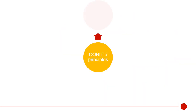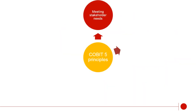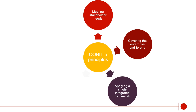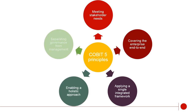COBIT-5 has five principles: meeting stakeholder needs, covering the enterprise end-to-end, applying a single integrated framework, enabling a holistic approach, and separating governance from management.